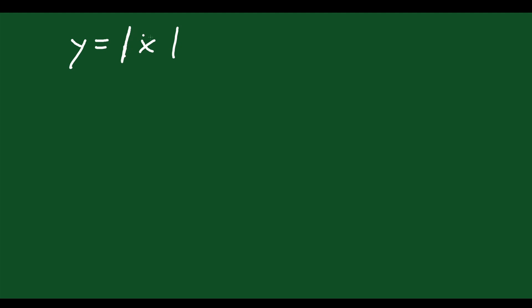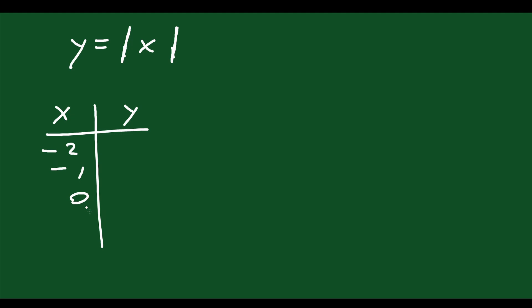Let's look at another type of function — the absolute value function. These symbols are just vertical lines that go up and down, and what that means is we're taking the absolute value of x. If you haven't heard the phrase absolute value before, all it means is the distance that number is from zero. So negative six is six units away from zero, meaning the absolute value of negative six is six. Essentially, you're just turning that number into a positive, whether it's negative or positive to start. If you do a table of values and plug in negative two, negative one, zero, one, two, the y values are just the positive parts: two, one, zero, one, two.